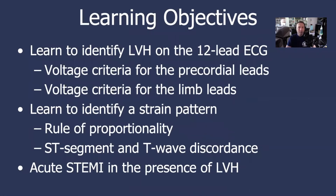Our learning objectives for today are: first, learn to identify LVH on the 12-lead ECG, and we'll go over voltage criteria for both the precordial leads and the limb leads. Second, we want to learn to identify the so-called strain pattern or secondary STT wave abnormality. To do that, we'll discuss the rule of proportionality and the rule of ST segment and T wave discordance when a strain pattern is present. Finally, we'll discuss diagnosing acute STEMI in the presence of left ventricular hypertrophy.